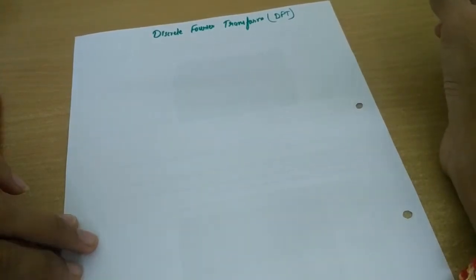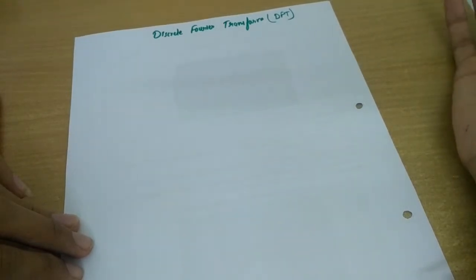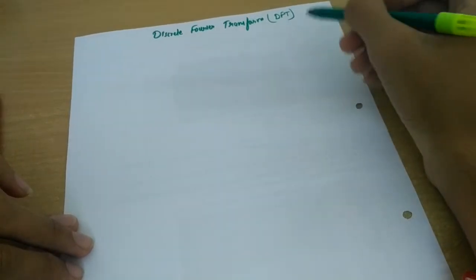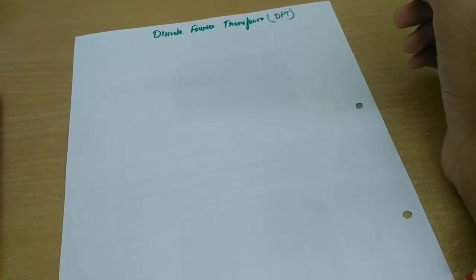Because at the end we want Fourier transform of a signal only to analyze it in frequency domain. So is there any particular need for this or are there some drawbacks associated with DTFT?